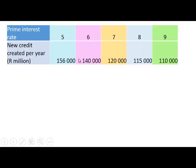You can see that the new credit created decreased when the prime interest rate increased. When the prime interest rate increases to 7%, the new credit created per year decreases again. So when the prime interest rate increases, new credit created per year decreases — there is a negative relationship.